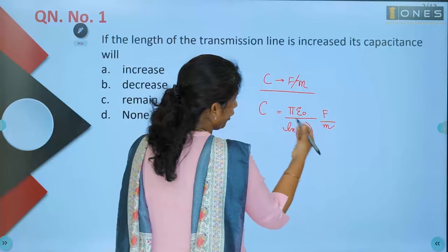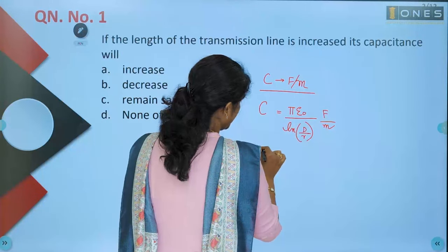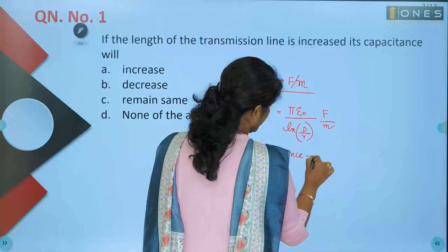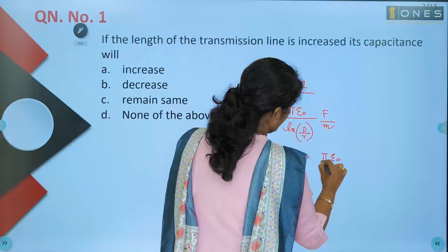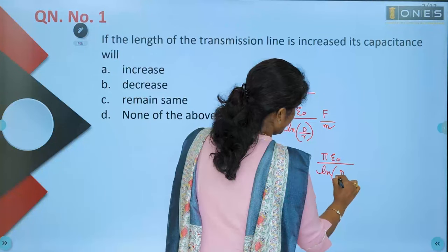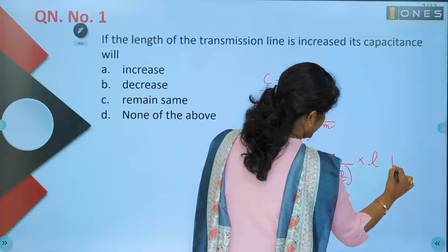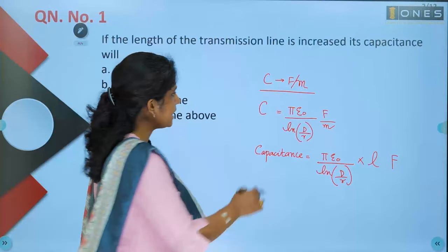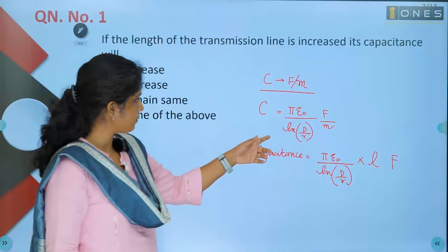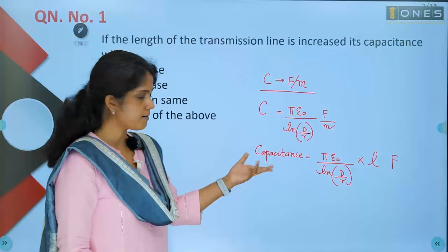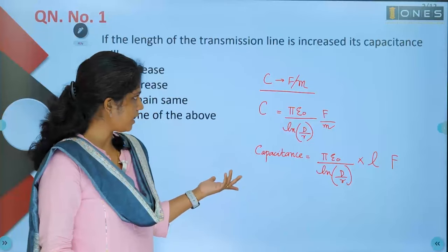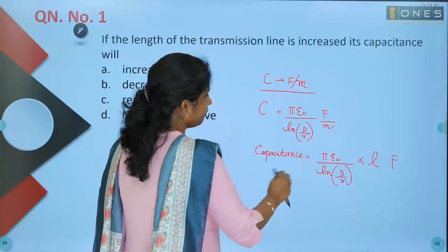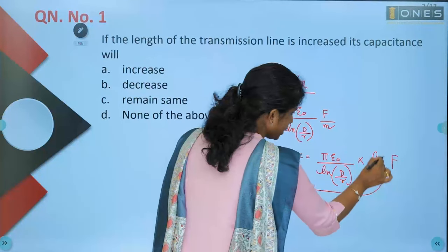Normally, speaking about the total capacitance of the line, it is pi epsilon zero divided by ln(d/r) into the length of the line, in farads. In this formula, epsilon zero is the permittivity of free space, d is the distance between the two conductors, and r is the radius of each conductor. So capacitance is always directly proportional to the length of the line.